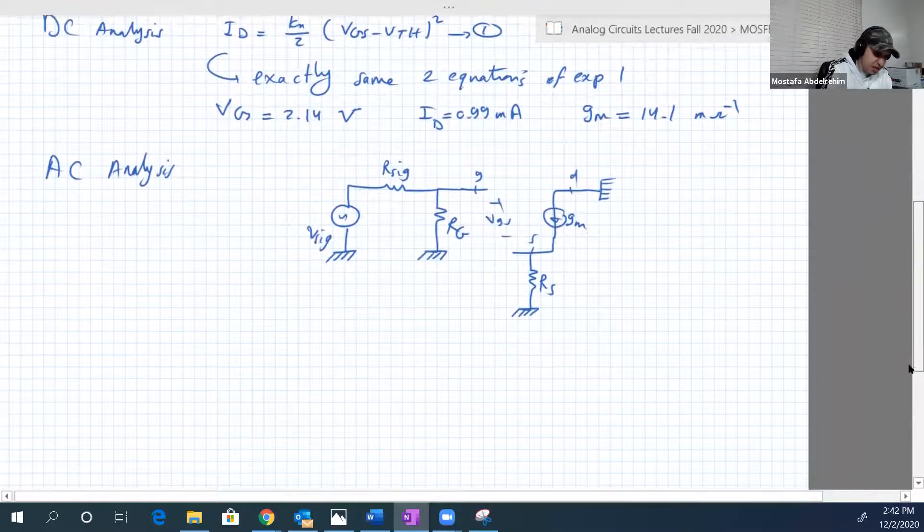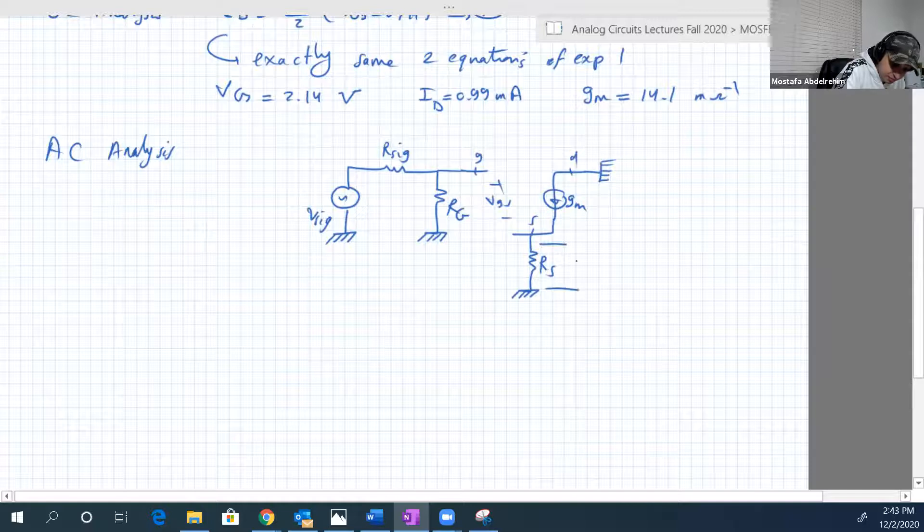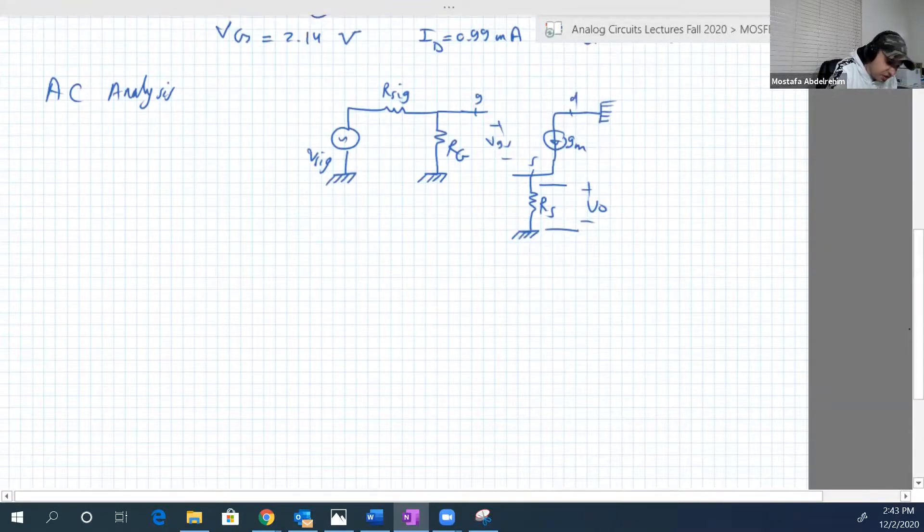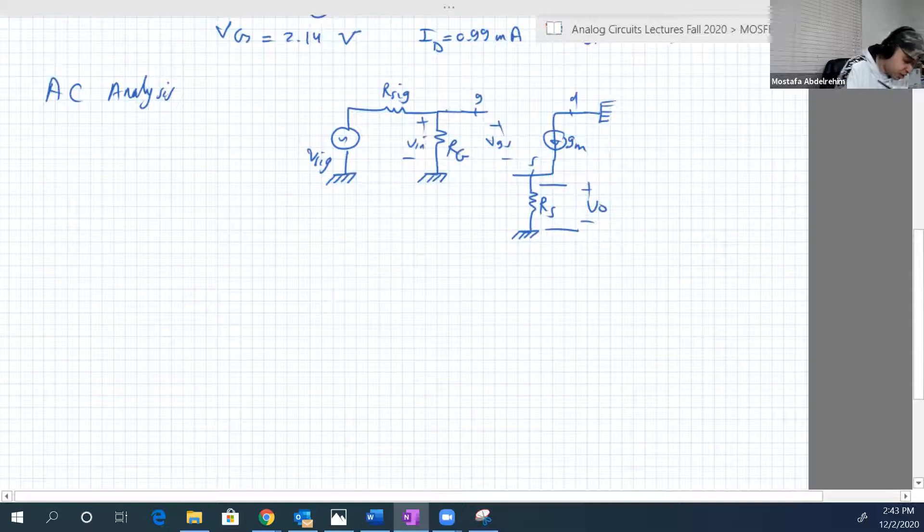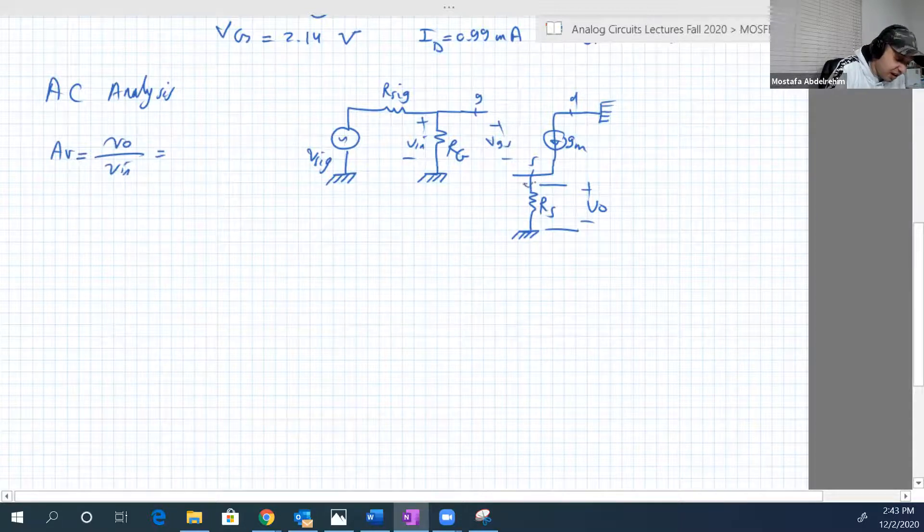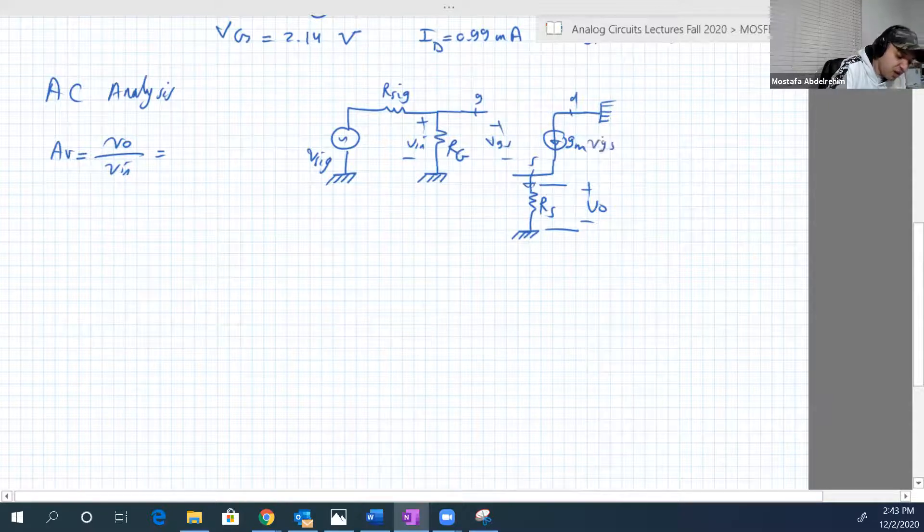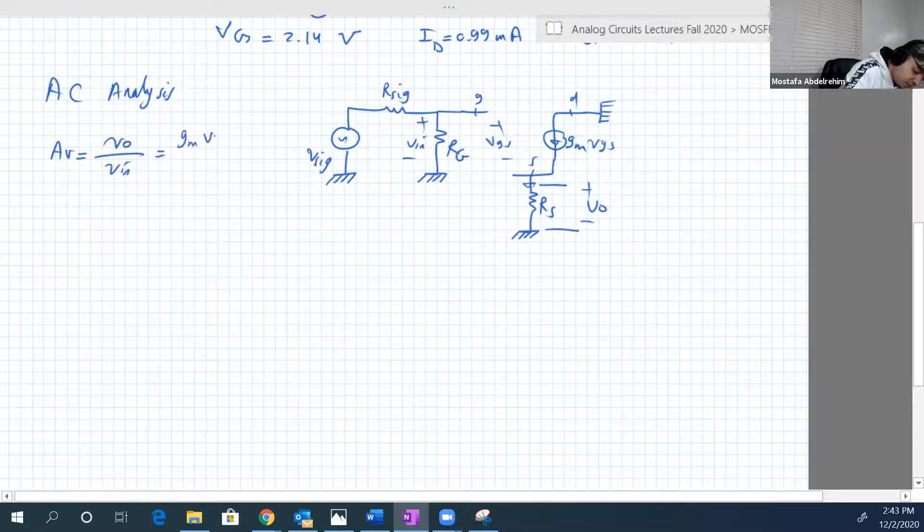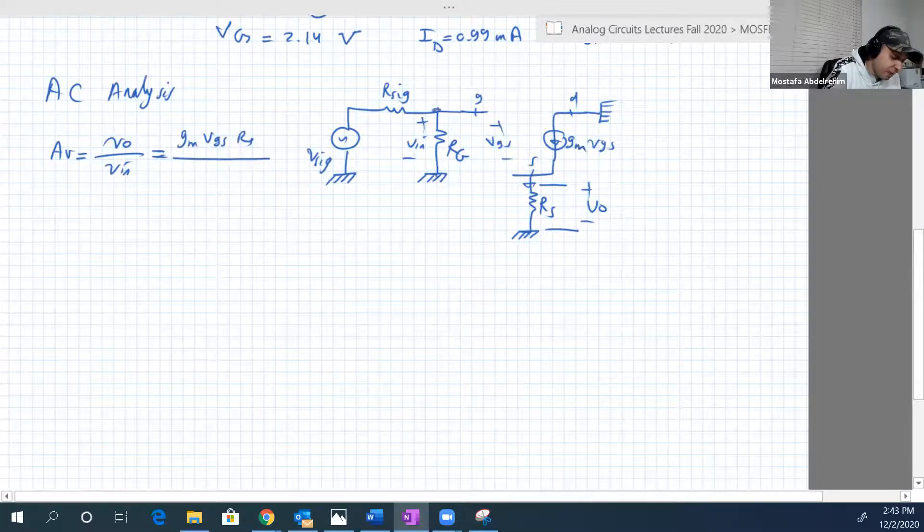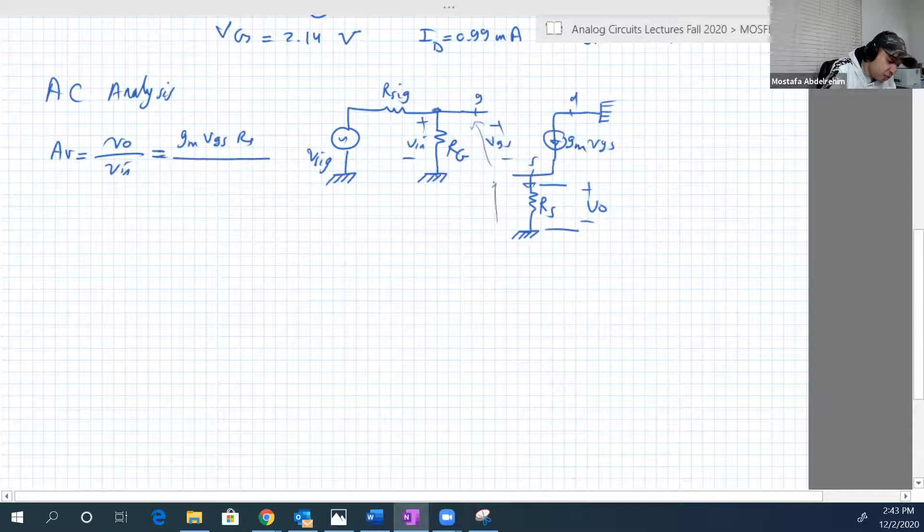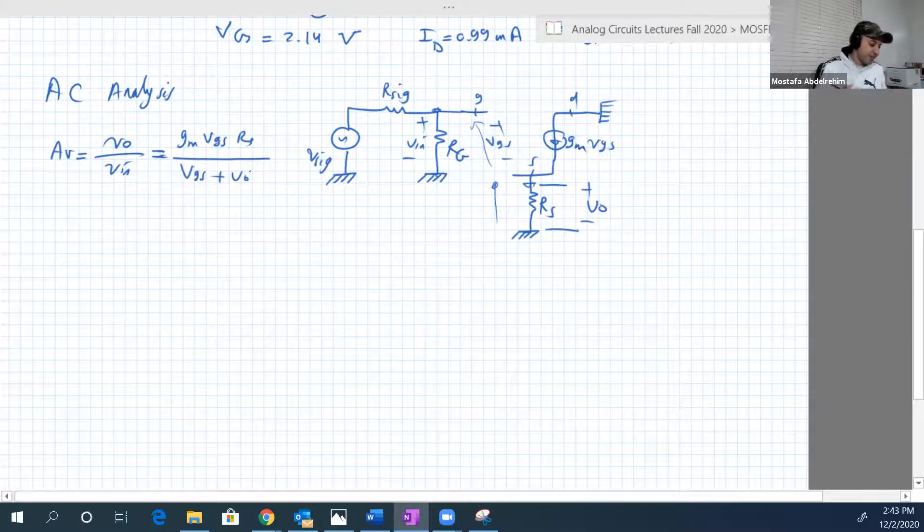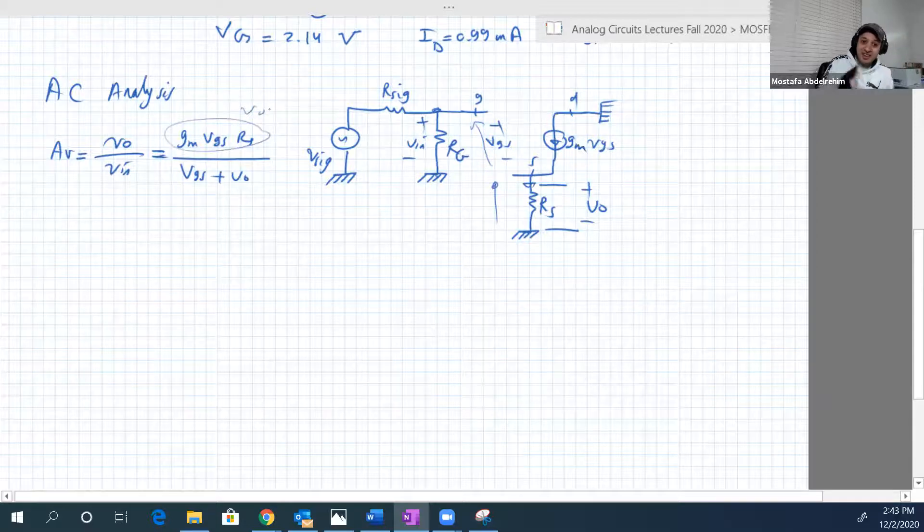Now let's get AV. So here is the output, guys. The output is the output across from the source, and here is the input from gate to ground. So AV is equal to VO over V input, equal to, VO is voltage across RS, which is GM VGS RS over V input. The input is the voltage between the gate and the ground, so between the gate and the ground, there is VGS and also the voltage across RS, so VGS, but that's VO basically. And remember, this is VO as well, so this is basically less than one.